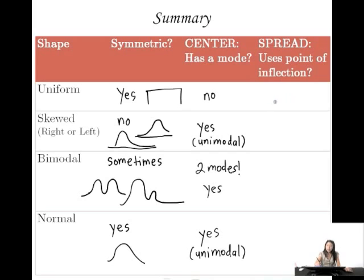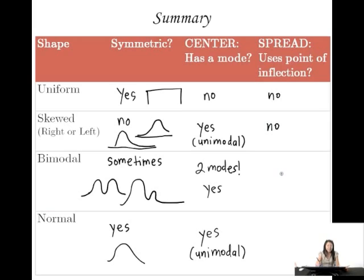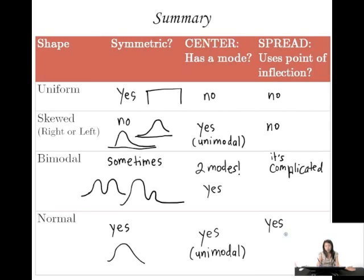Now let's talk about spread. For uniform distributions, the spread is roughly even and goes as far as the values go — no point of inflection used. For skewed distributions, the point of inflection is awkward because it cuts differently on each side of the mode. For bimodal distributions, sometimes you could use the point of inflection, but it gets complicated. It's really only for the normal distribution that the point of inflection comes in really handy, giving us the standard deviation — the distance from the mode to the point of inflection.